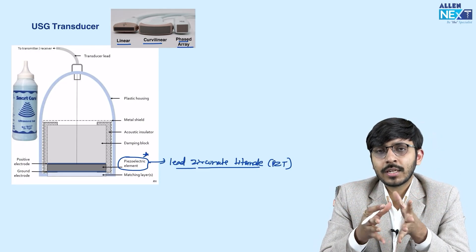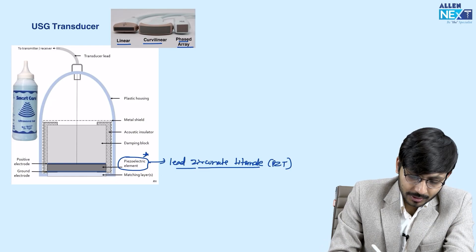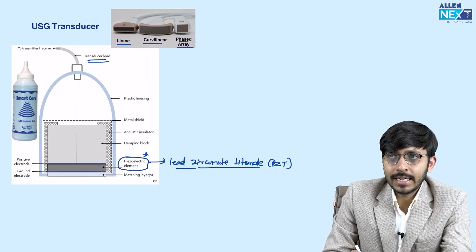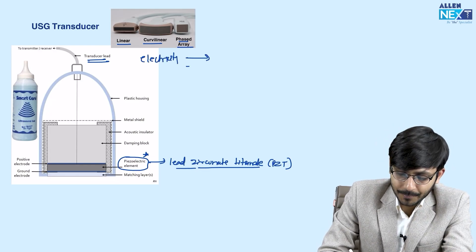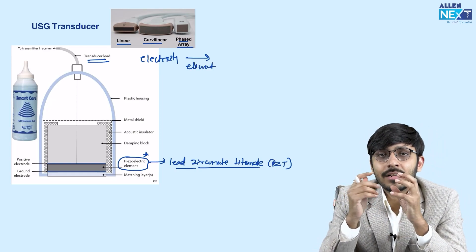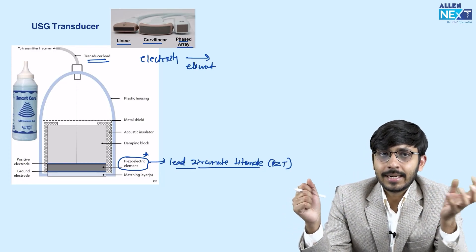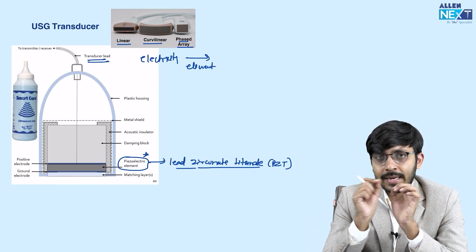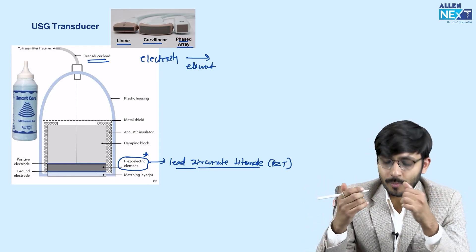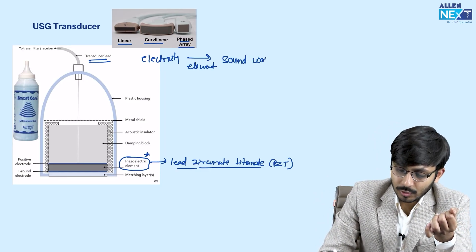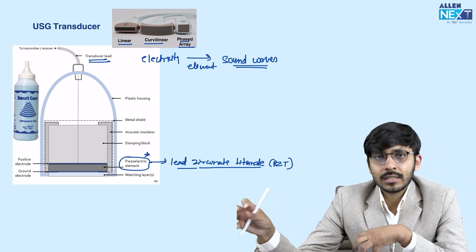All these ultrasound probes share some basic principles. How is a sound wave produced? The ultrasound transducer is connected to the electric supply, and when electricity is passed through the piezoelectric element, compressions and rarefactions are induced into the crystal. The crystal undergoes vibrations secondary to electrical stimulation, and these result in formation of sound waves. The piezoelectric element converts electrical energy into mechanical energy in the form of sound waves.